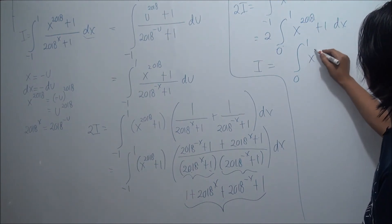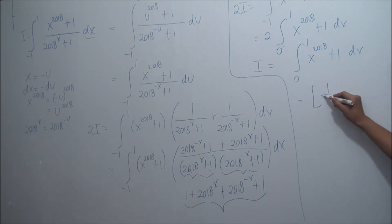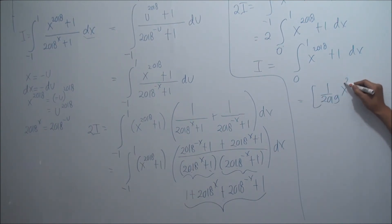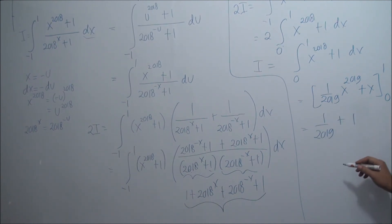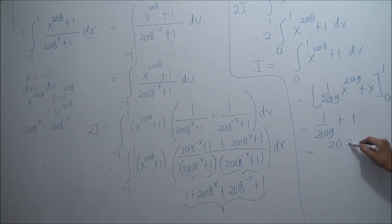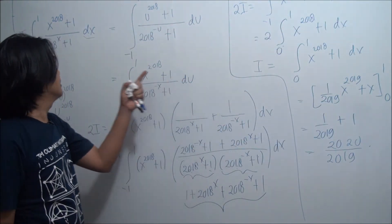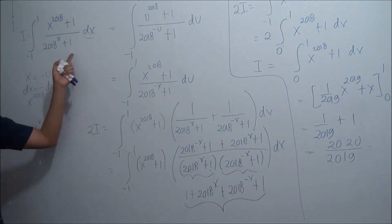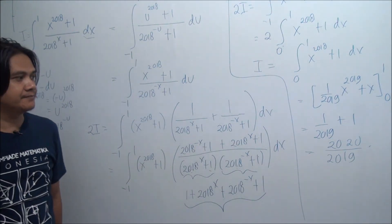Evaluating: I equals the integral from 0 to 1 of x to the power of 2018 plus 1, dx, which equals 1 over 2019 times x to the power of 2019 plus x, evaluated from 0 to 1. Plugging in 1 and 0 gives 1 over 2019 plus 1, which equals 2020 over 2019. Isn't it beautiful? From this messy integral, the answer is 2020 over 2019.